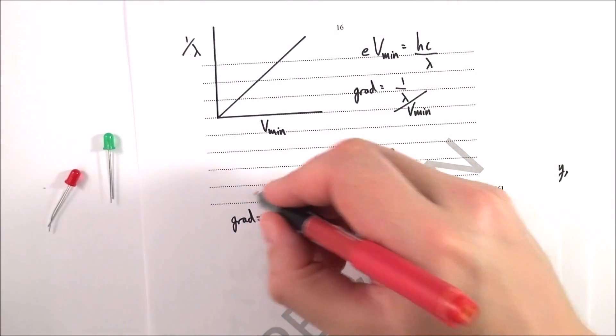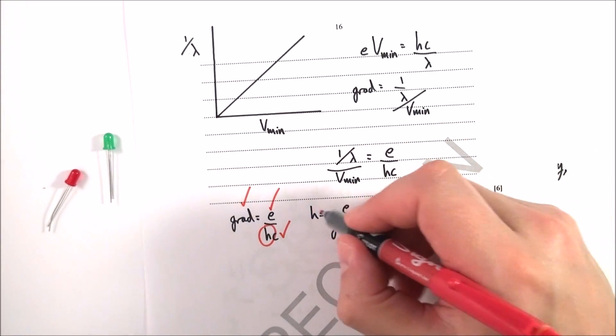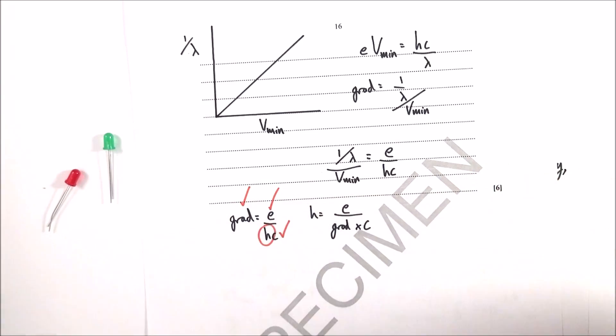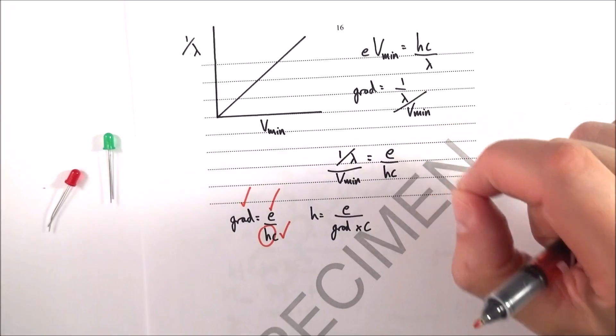You equate the two things together. The gradient equals e over hc. We know e from our data books, we know c, and we've worked out the gradient. We want to find out the Planck's constant, and therefore Planck's constant is equal to e over the gradient times c. This is your graphical method for working out Planck's constant.